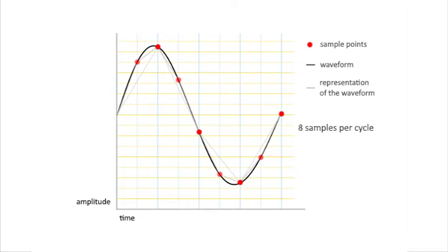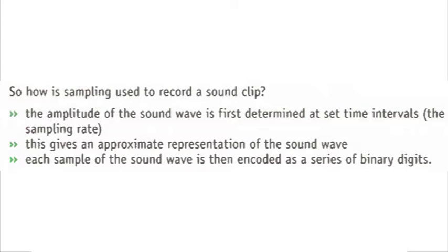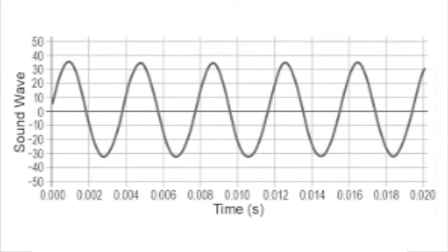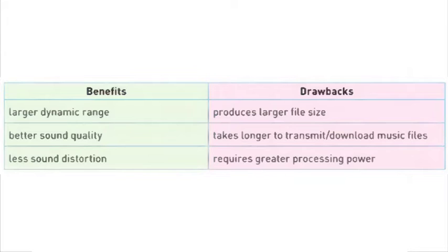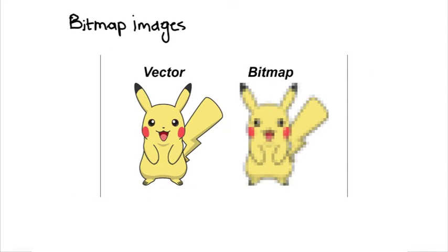Sampling rate is the number of sound samples taken per second, measured in hertz, where 1 hertz means 1 sample per second. To record a sound clip, the amplitude of the sound wave is first determined at set time intervals — the sampling rate — giving an approximate representation of the sound wave. Each sample is then encoded as a series of binary digits. Using a higher sampling rate or larger resolution will result in a more faithful representation of the original sound, but the higher the sampling rate and resolution, the greater the file size. CDs have a 16-bit sampling resolution and a 44.1 kHz sample rate — that is, 44,100 samples every second — giving high-quality sound reproduction.